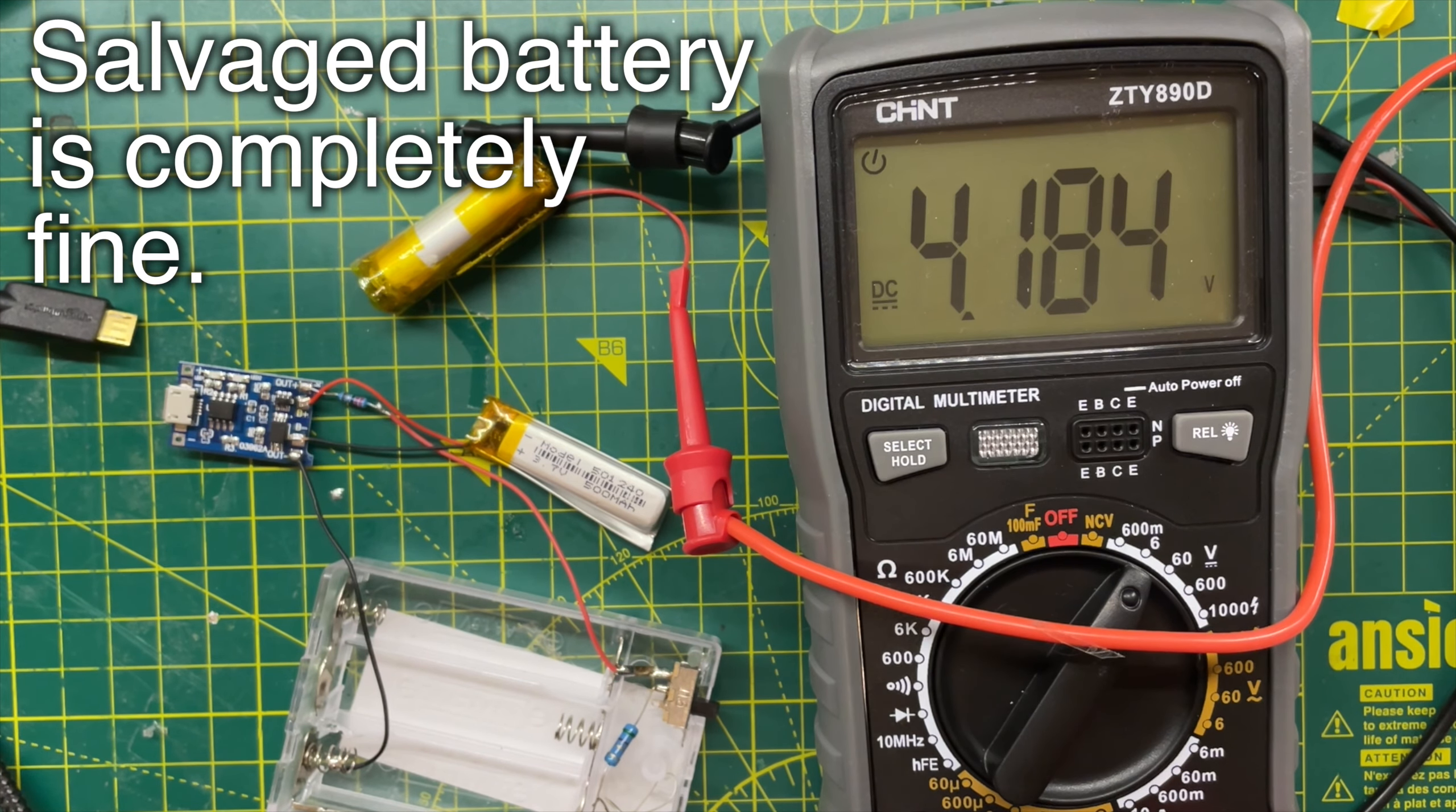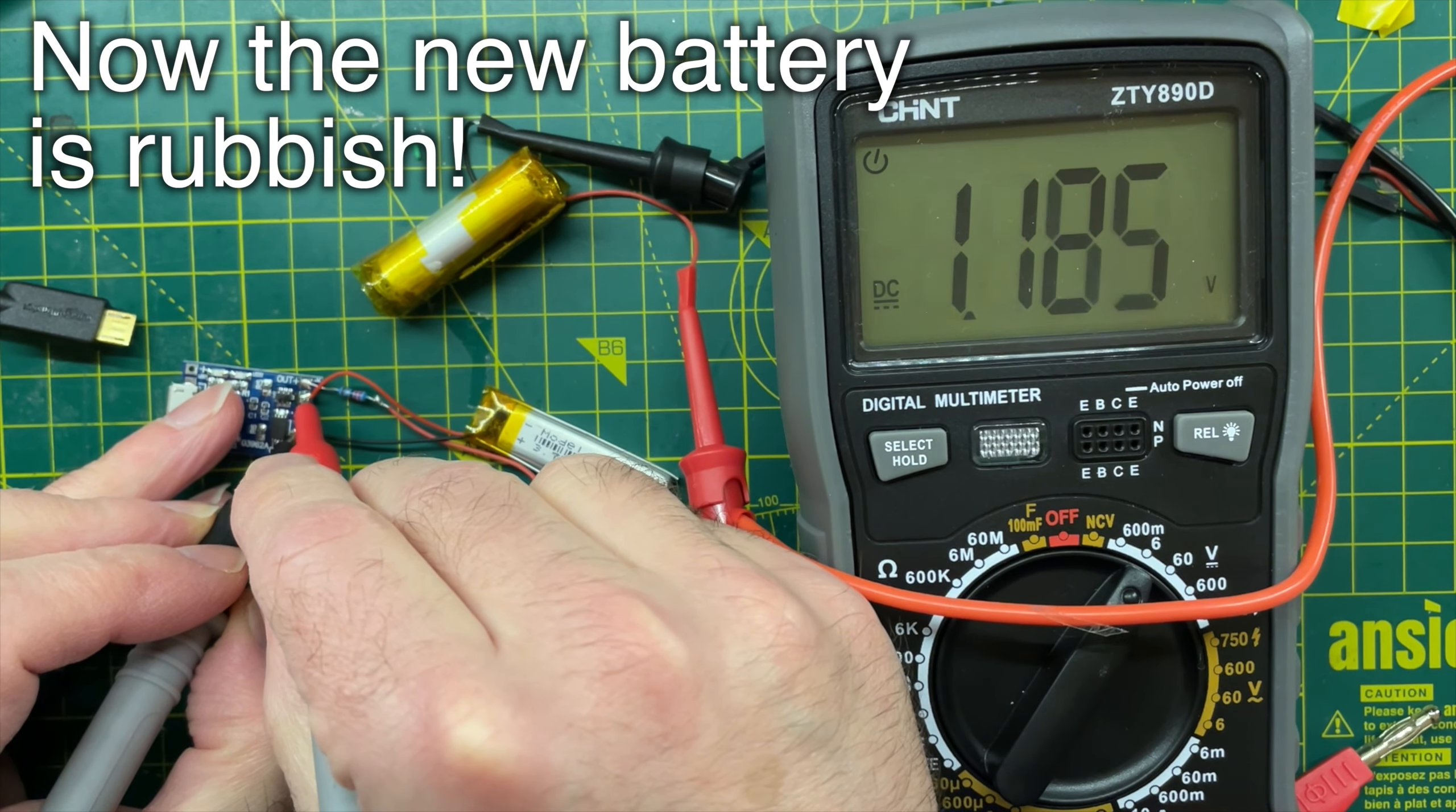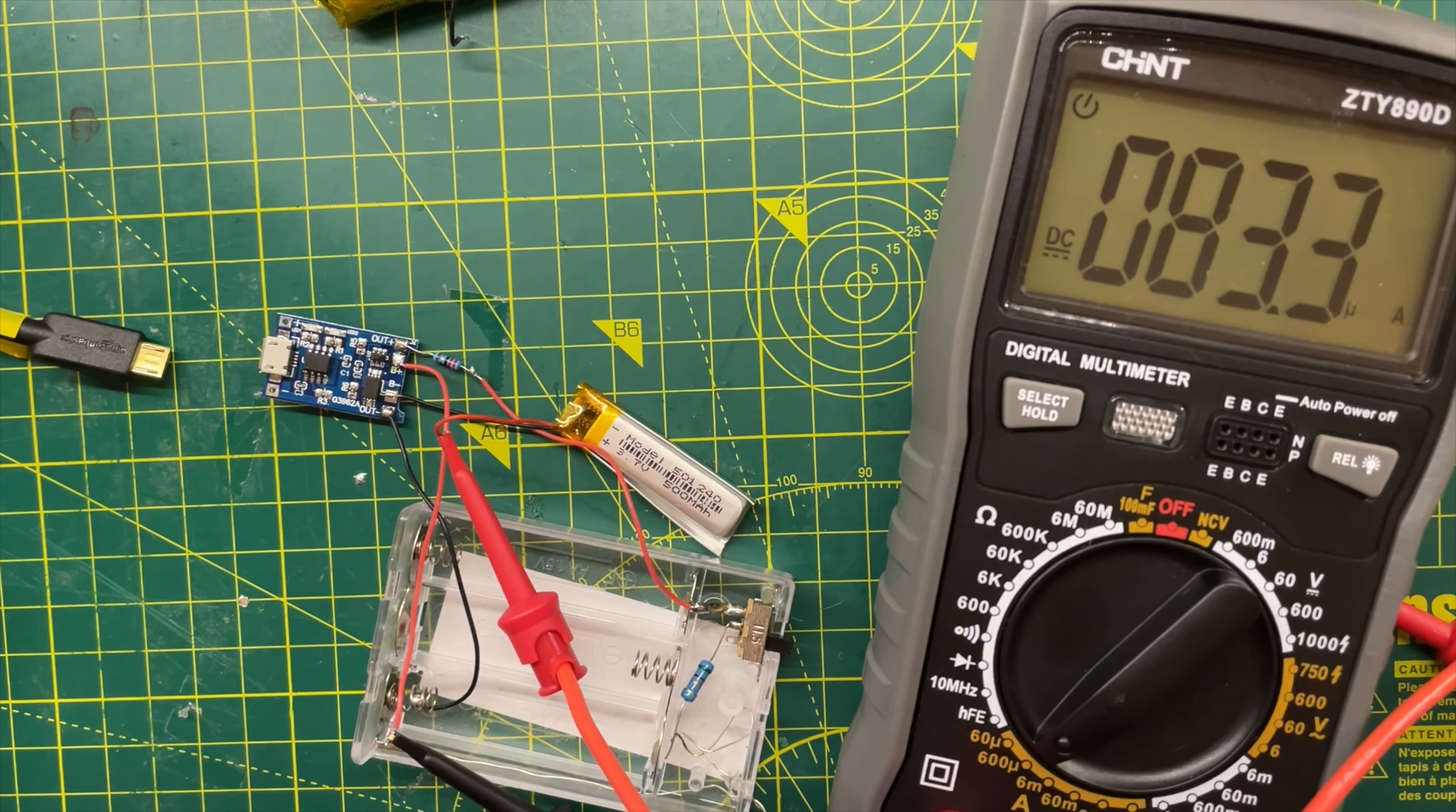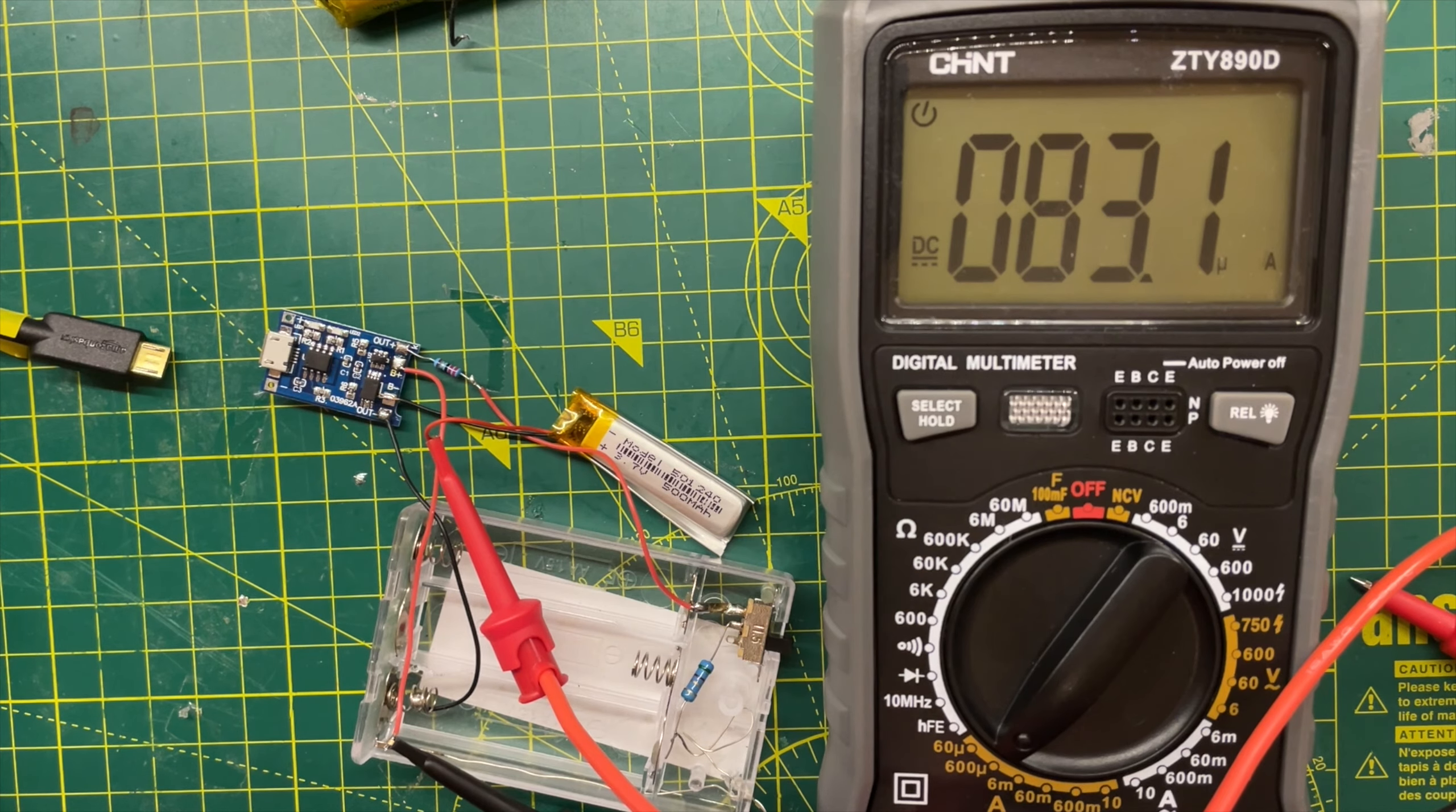Checking in the morning, the old battery held its charge perfectly. It's completely fine. But the new battery is almost completely dead. I measured the current flowing out of the battery again and everything seemed fine. There was nowhere near enough current to drain the battery.